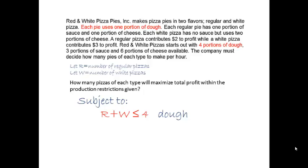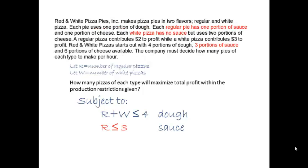All the dough used making pizzas is limited to the four portions available. So the constraint equation for dough is an inequality: R plus W, the dough used, must be less than or equal to 4, the dough available. Now look at sauce. Each regular pizza uses one portion of sauce, and the total sauce used must be three portions or less. So 1R must be less than or equal to 3. White pizza doesn't use sauce, so W does not appear in the sauce constraint.